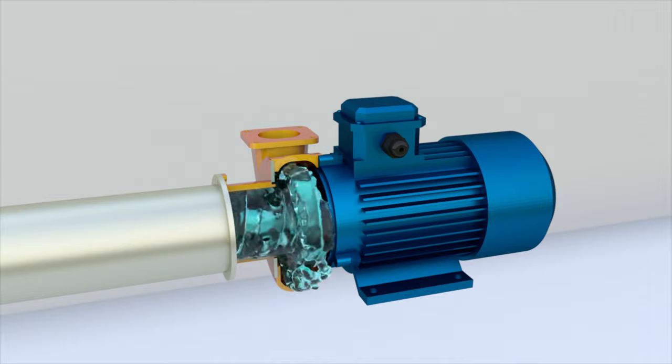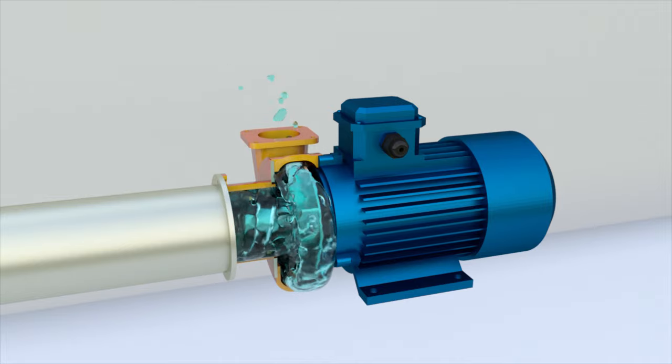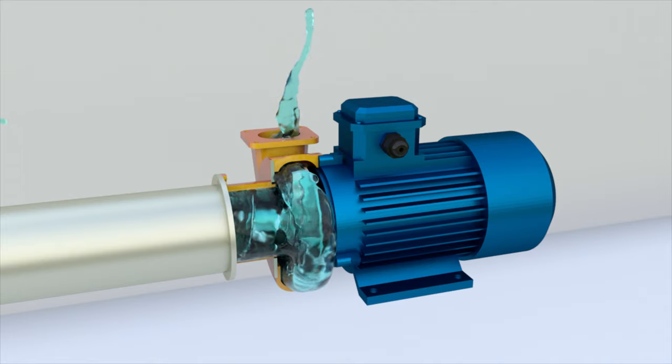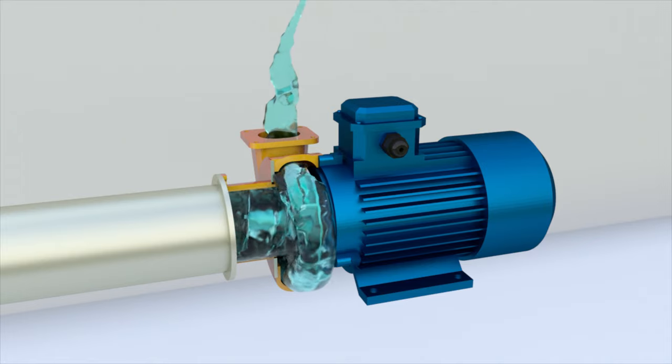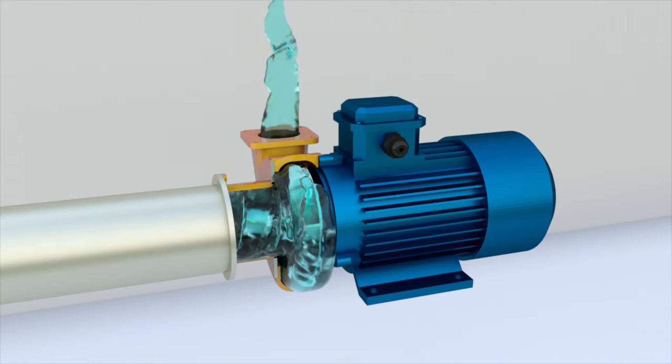In multi-stage pumps, different impellers can be used. For example, a screw centrifugal pump has an auger on the first stage and a centrifugal impeller on the second stage.